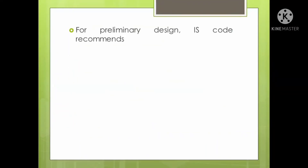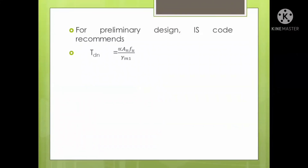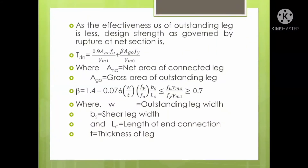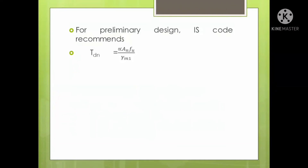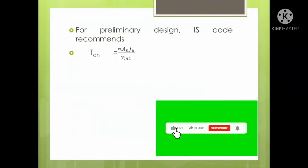For preliminary design, IS code recommends the equation: TDN = α × AN × FU / γM1. This is used when detailed data such as BS, LC, and T are not yet available — you use this equation to select the section.